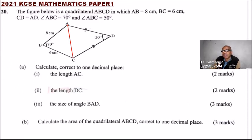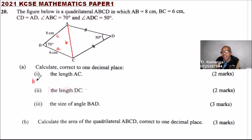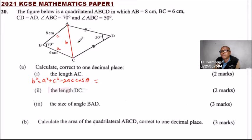I would rather use small letters. So this is 'a', this is 'c', and this is 'b', where b is AC. We can say b squared equals a squared plus c squared minus 2ac times the cosine of B.